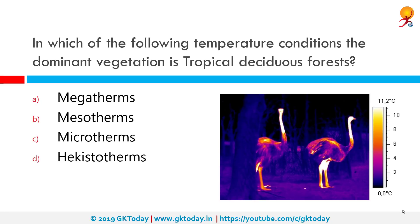In which temperature conditions is the dominant vegetation tropical deciduous forests? The correct answer is in mesotherms. A mesotherm is a type of animal with a thermoregulatory strategy intermediate to cold-blooded ectotherms and warm-blooded endotherms. Cold-blooded animals are known as ectotherms, warm-blooded as endotherms, and the one in between is known as mesotherms.